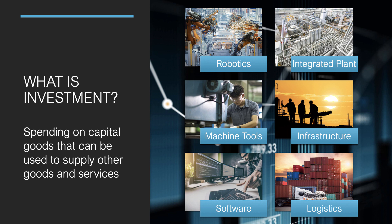There are lots of examples of investment on the slide: robotics and car manufacturing, huge integrated plants in the brewing industry or the food processing sector, machine tools used in heavy and light industry, key infrastructure such as power and transport, software that goes with hardware, and investment in trucks and container ships in the logistics sector.